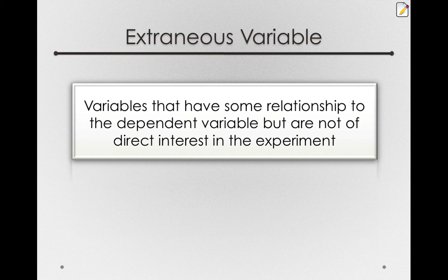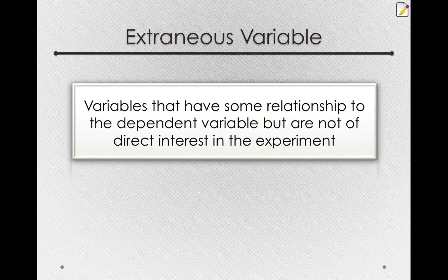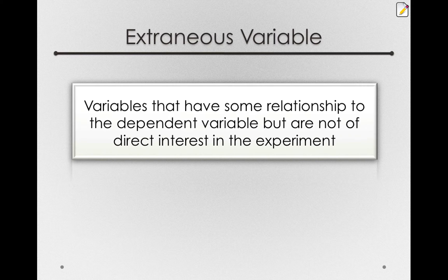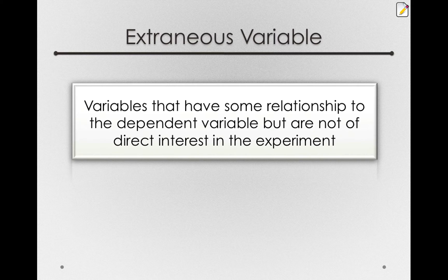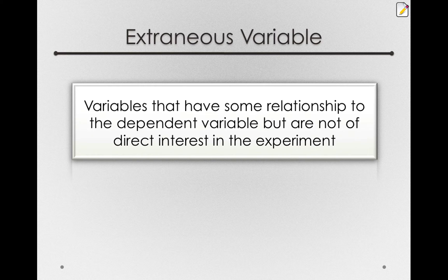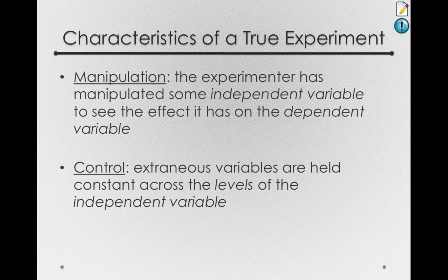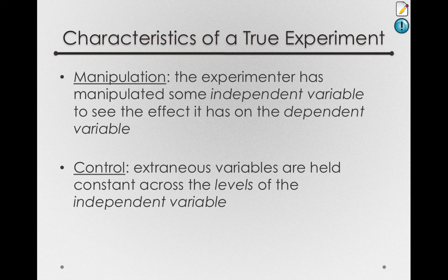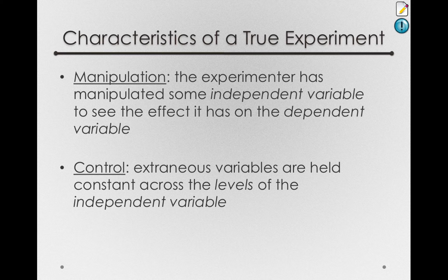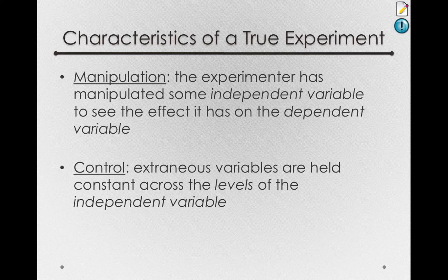Thinking back to that caffeine example with exam scores, an extraneous variable might be how much somebody has studied. This is certainly something that will relate to somebody's exam score, but that's not the direct interest of the experiment. We hope that when we do an experiment, study time or how much somebody knows or any other variable that relates to exam score are constant across the levels of the independent variable.